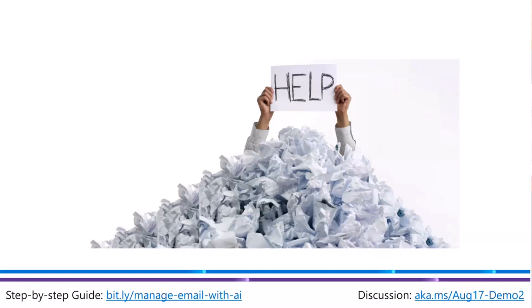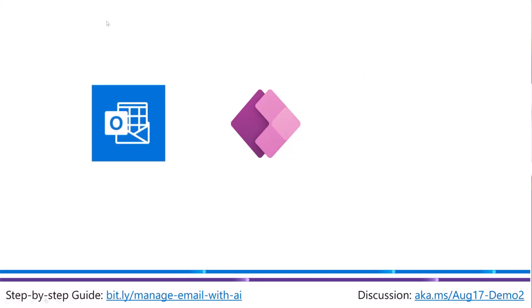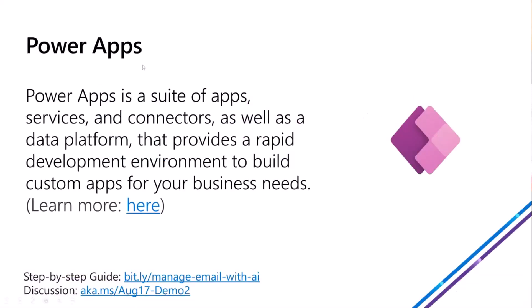To get you started, the first service from the Power Platform we are going to use is Power Apps. We're using Power Apps because it's an easy tool that we can build applications on that people can interact with easily. We also need to manage emails, so we'll use another service — the Microsoft Office 365 Outlook connector. And for AI, we are going to use the AI Builder tool. Power Apps lets you build low-code to no-code solutions for your business.